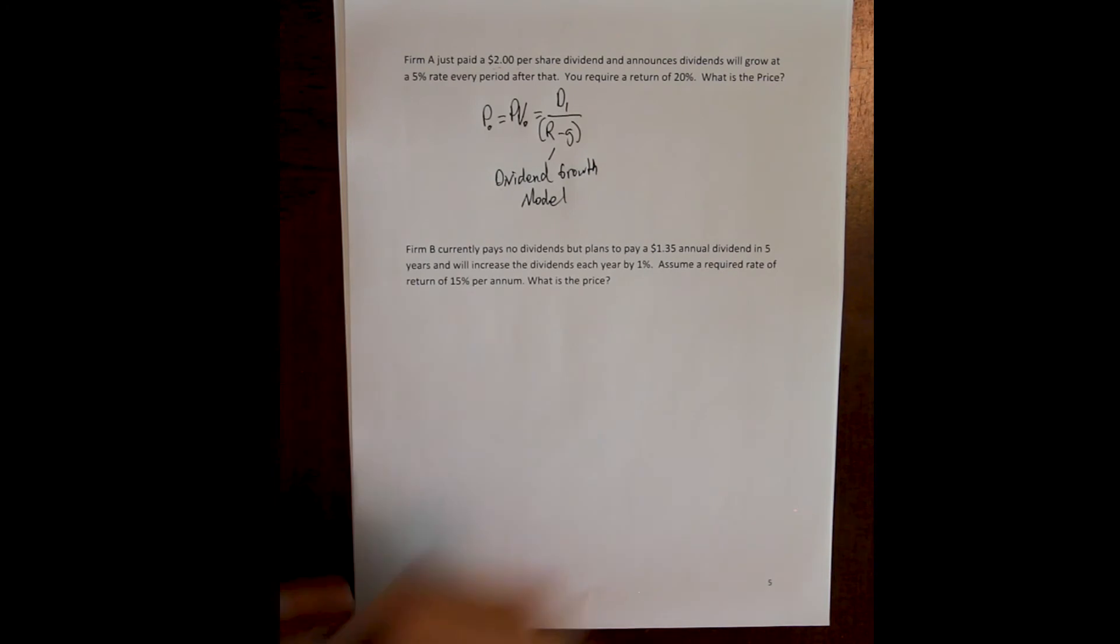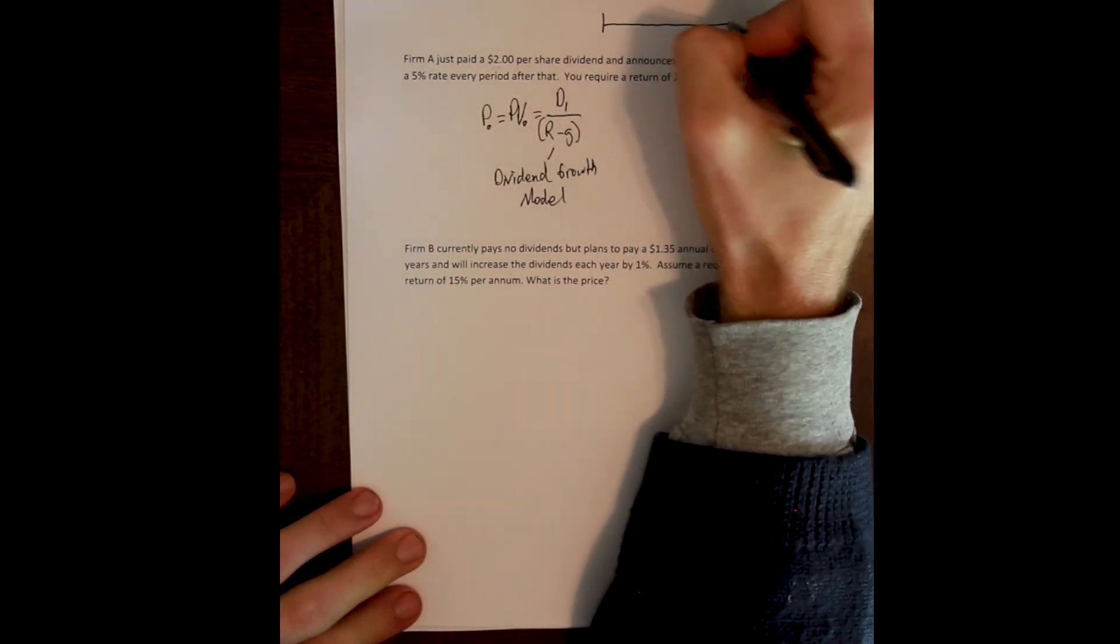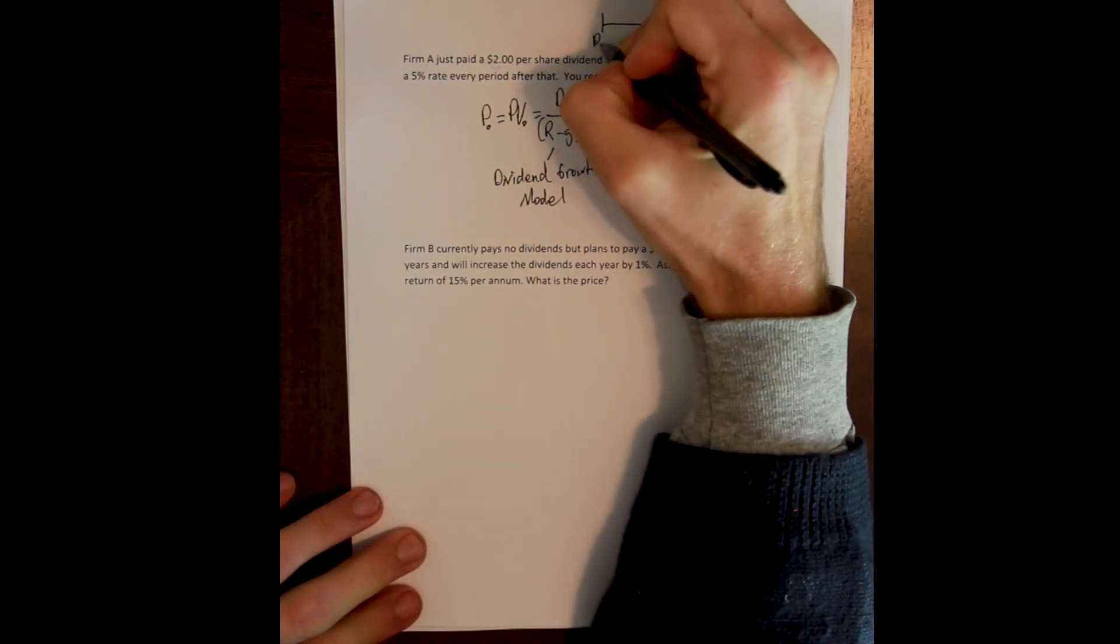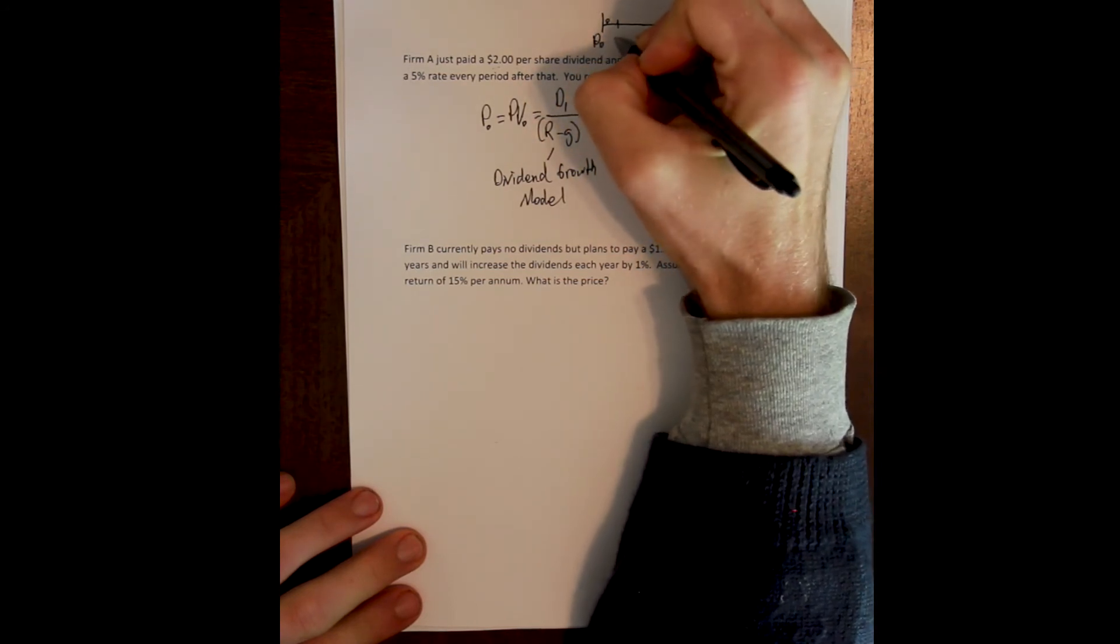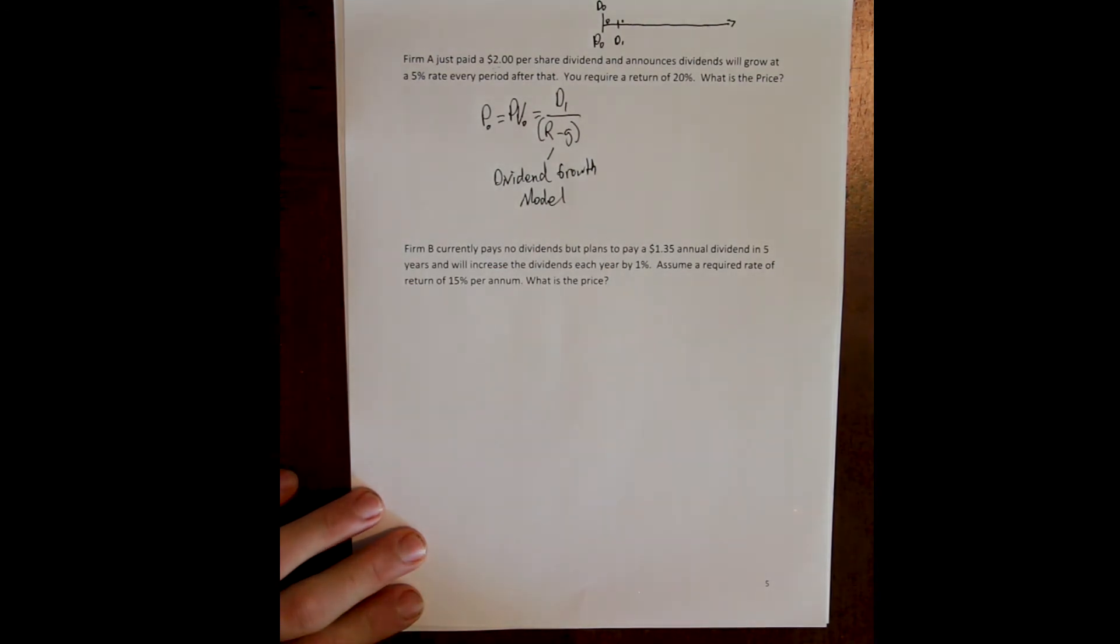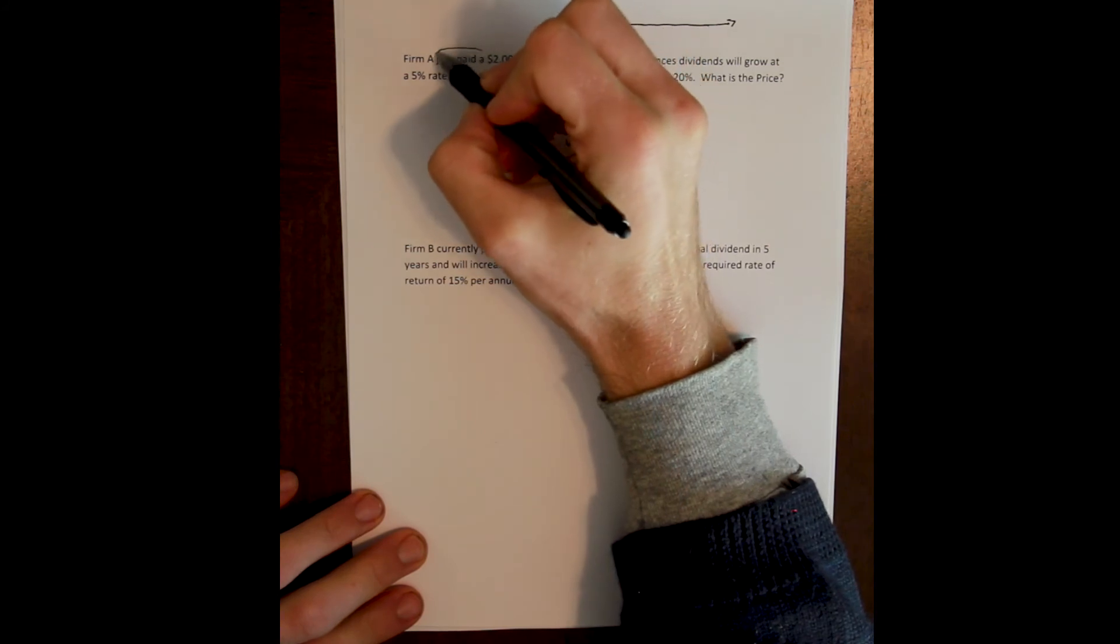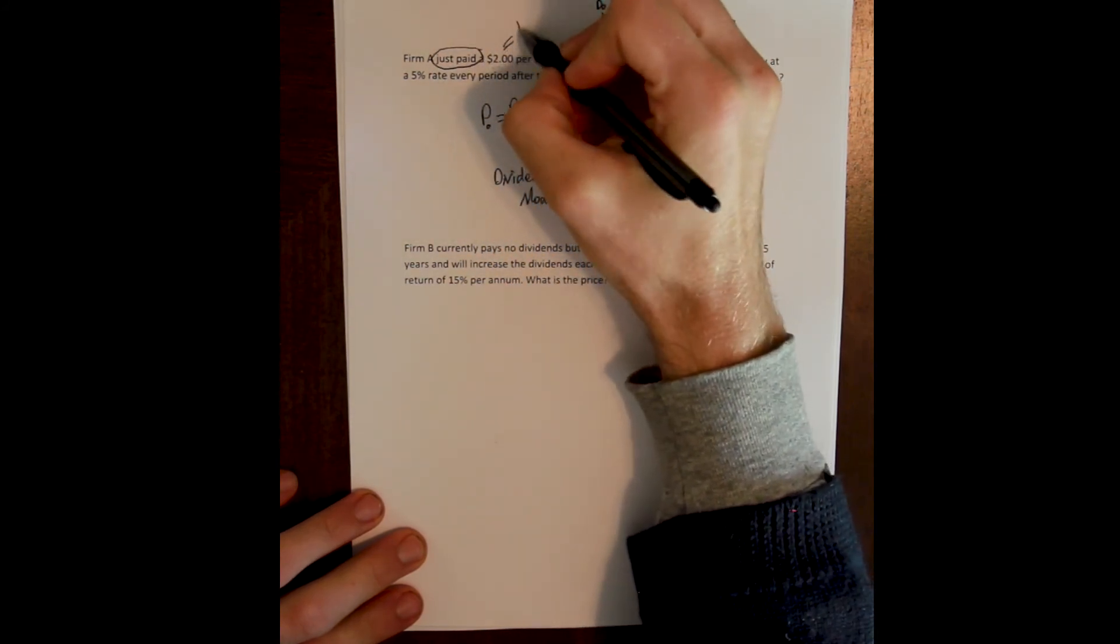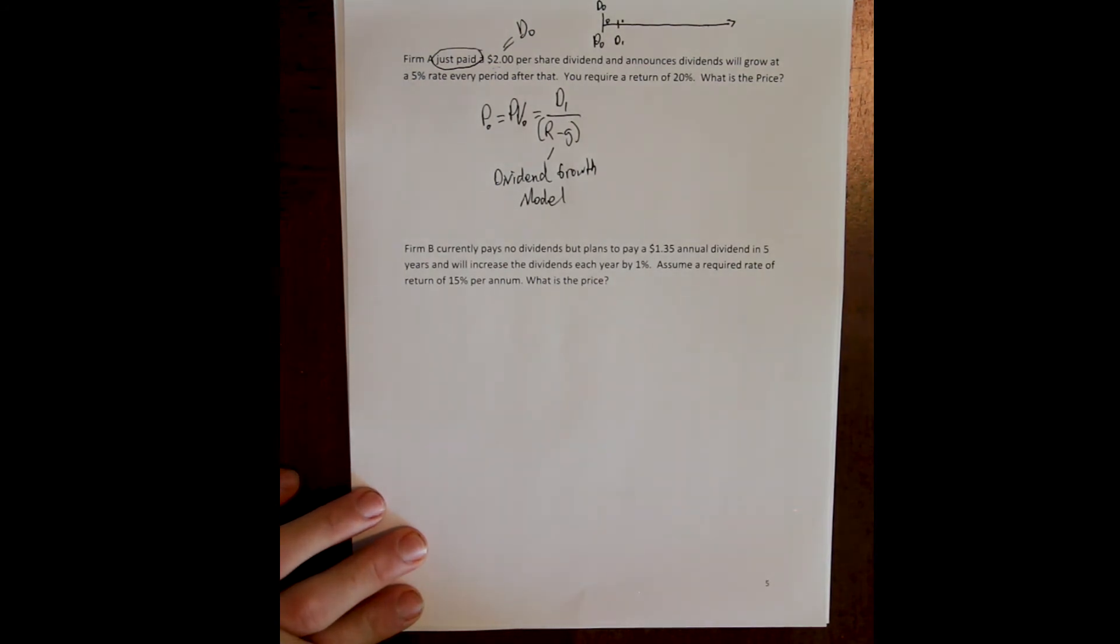If we have our timeline of dividends here, the price is here at time period zero, d1 is here at time period one, and we may have been paid a dividend previously, and that would be d0. The firm just paid a $2 dividend, so that means this is what we call d0, the dividend that we have already received. The best way to think about it is like this happened yesterday, so you just received the dividend yesterday, and they're telling you that the dividend you're going to get in a year should be 5% higher. That's d1.